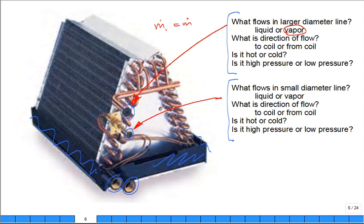What comes in goes out. And so you need liquids compact, high density, smaller line is needed.